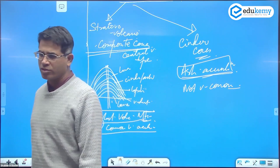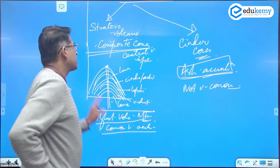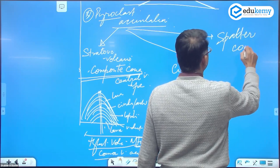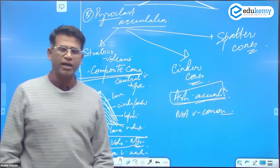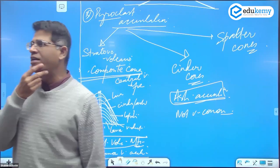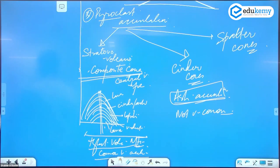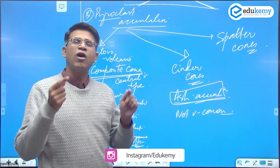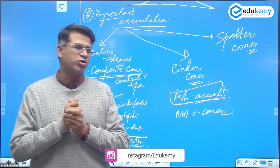The third type, they are called as spatter cones, S-P-A-T-T-E-R, spatter cones. Their accumulations of volcanic bombs. And all the three are features on the continents, not on the oceans, and they're all associated with violent volcanic explosions.